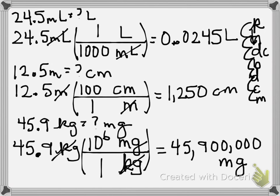A problem like this is typically worth 5 points. You get a point for the correct answer, a point for the correct units, a point for significant figures — that's 3. Then you get 2 points for having your work shown correctly using dimensional analysis.